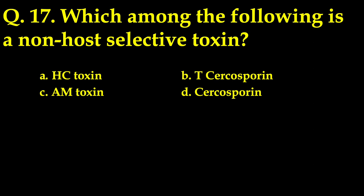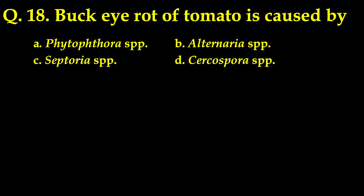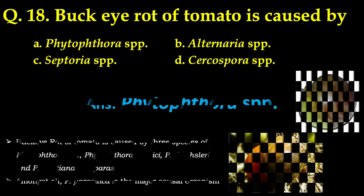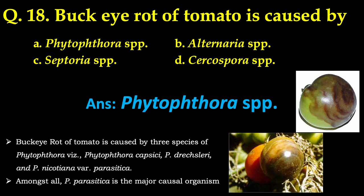Let us see another question: which among the following is a non-host selective toxin? Amongst the four options, the correct answer is cercosporin — it is a non-host selective toxin. Buckeye rot of tomato is caused by Phytophthora species. Buckeye rot of tomato is caused by three species: Phytophthora capsici, Phytophthora drechsleri, and Phytophthora nicotianae var. parasitica, amongst which Phytophthora parasitica is the major causal organism.